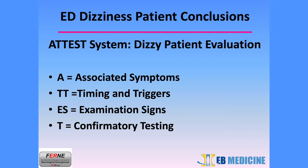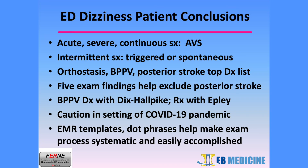In conclusion, the ATTEST system for the evaluation of the dizzy patient includes: A — Associated Symptoms; T — Timing and Triggers; E — Examination Signs; S — and T — Confirmatory Testing. When evaluating an ED patient with dizziness, using the ATTEST system, patients with acute, severe, continuous symptoms should be considered to have acute vestibular syndrome. Patients with intermittent or non-continuous symptoms are noted to have either triggered or spontaneous episodes of dizziness and vertigo.